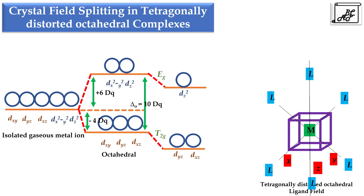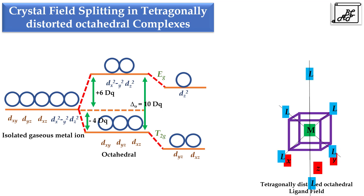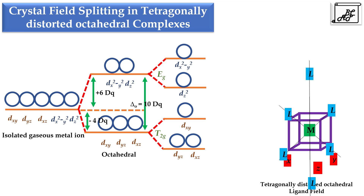When the ligands along the z-axis move away from each other, the ligands along x and y-axis get some space and they move closer to the central metal atom. Due to this, the repulsion along the x and y-axis increases and the energy of dxy and dx²-y² orbitals is increased. This is called crystal field splitting in tetragonally distorted octahedral complexes.